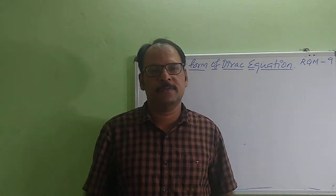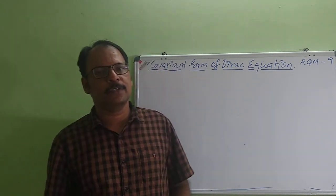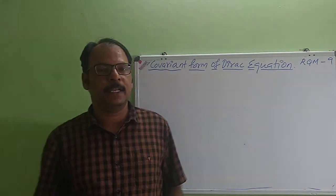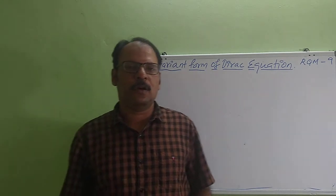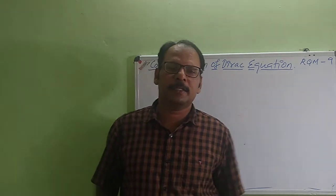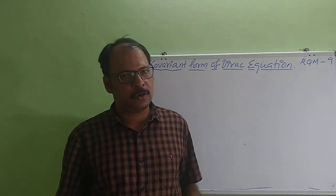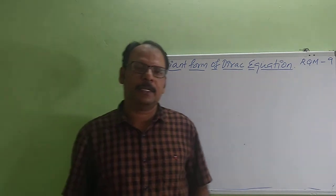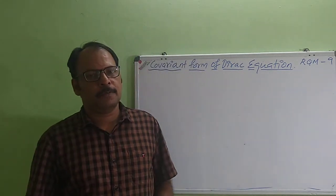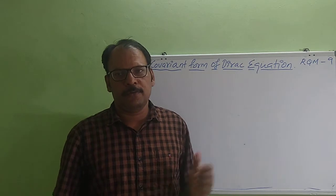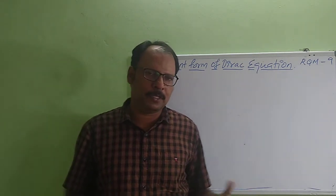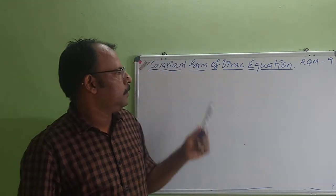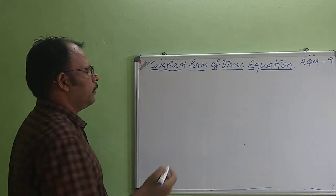Good morning. In this class we will represent the Dirac relativistic wave equation in covariant form. To make it relativistically invariant, it should be represented in covariant form. Schrödinger's relativistic wave equation is second order in both time and space coordinates, and we have represented that equation in covariant form. Now we represent the Dirac equation in covariant form — the time derivatives appear in first order form.